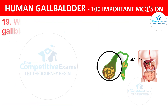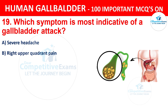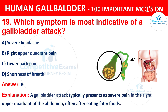Question 19: Which symptom is most indicative of a gallbladder attack? Your options are: A) Severe headache, B) Right upper quadrant pain, C) Lower back pain, D) Shortness of breath. The correct answer is B, right upper quadrant pain. A gallbladder attack typically presents as severe pain in the right upper quadrant of the abdomen, often after eating fatty foods.